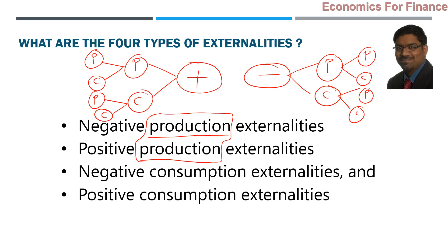If it is a consumption externality, it happens while somebody is consuming something. For example, somebody is smoking — he is consuming, not producing anything. That creates a negative consumption externality which could impact others badly. If somebody is smoking and there is a person adjacent to him enjoying an ice cream, that person cannot enjoy the ice cream because of the smoke — negative consumption externality caused another person's consumption to be hampered.